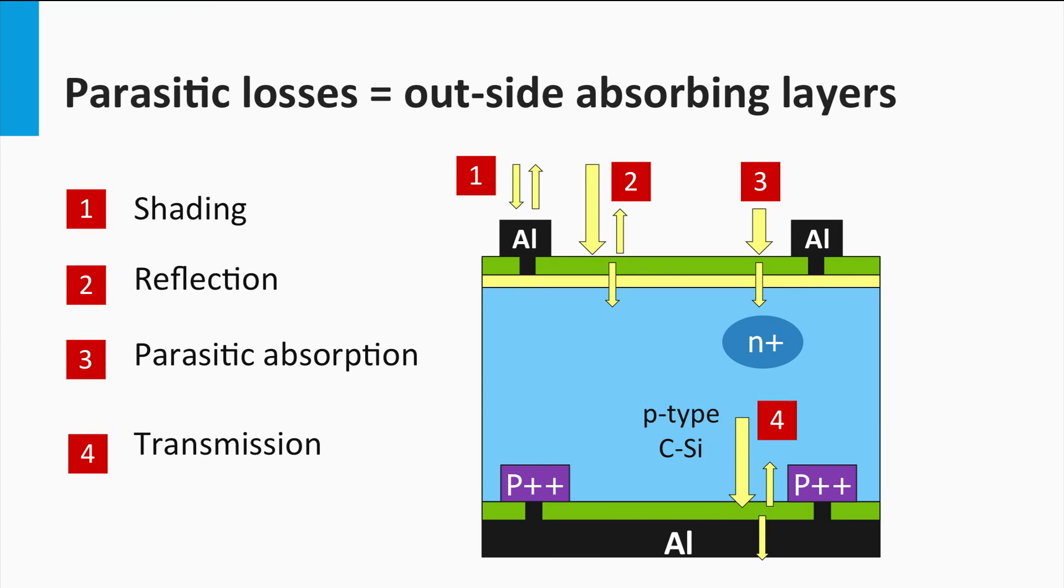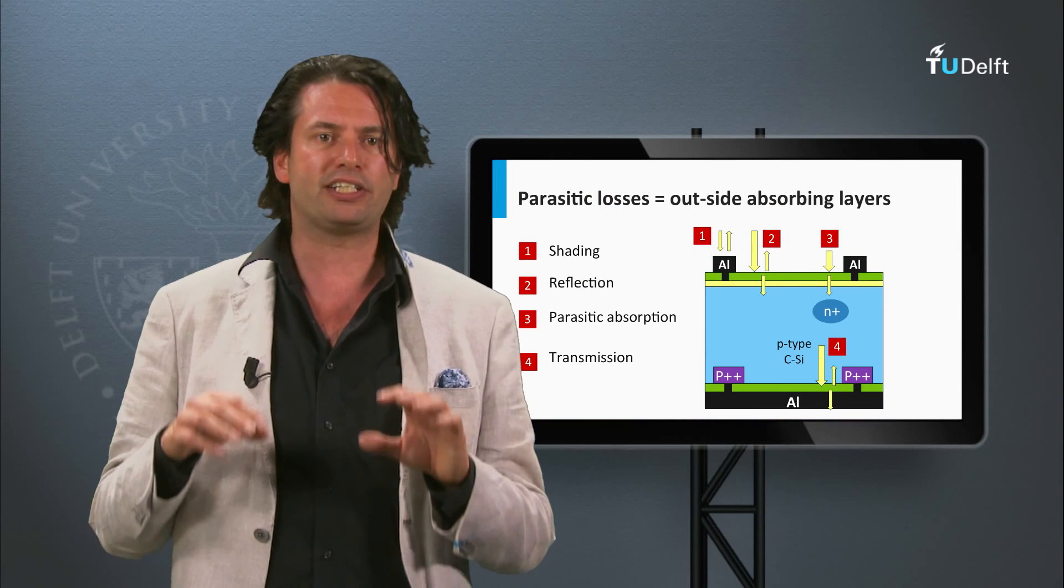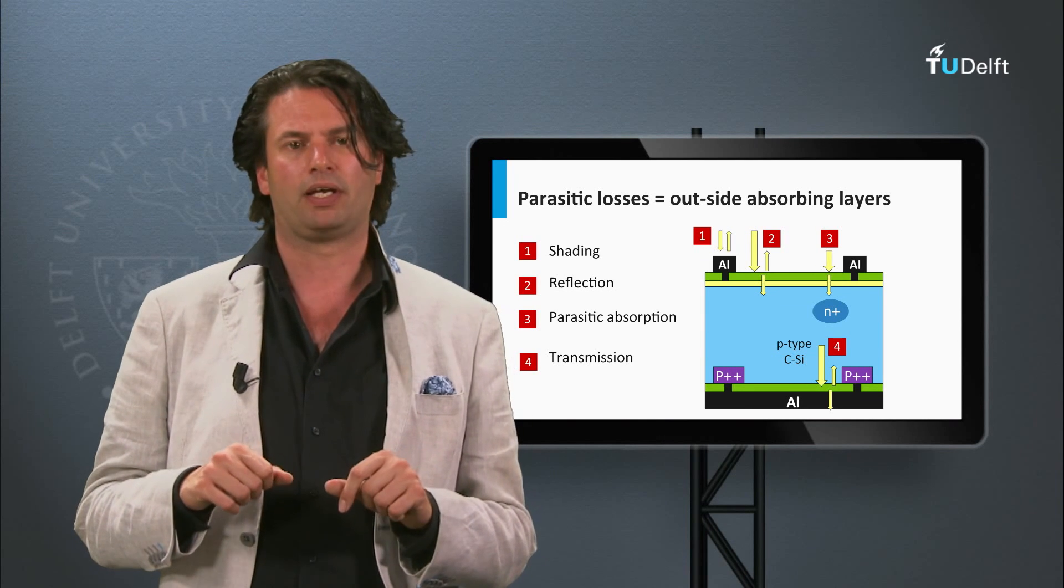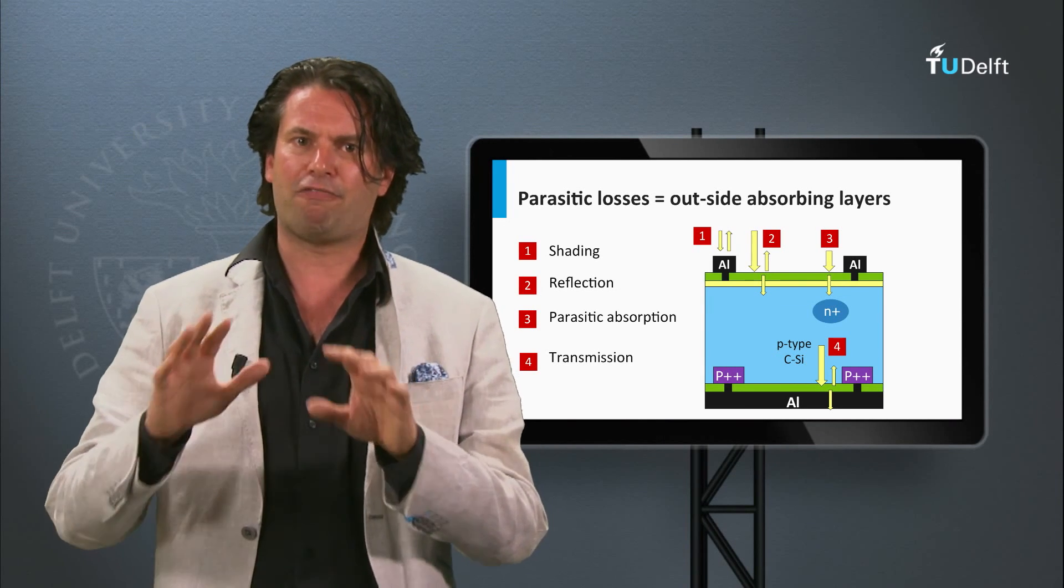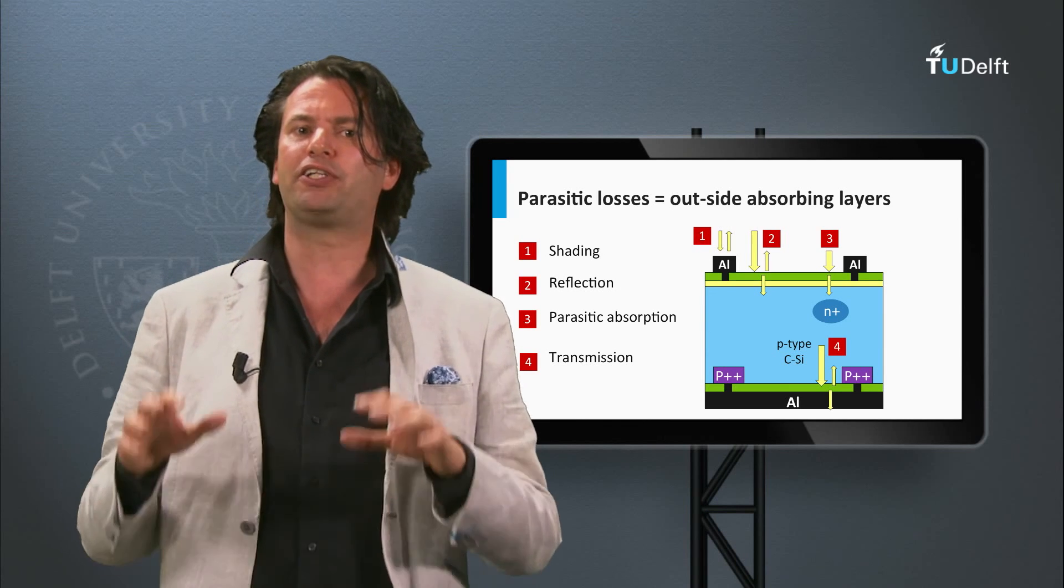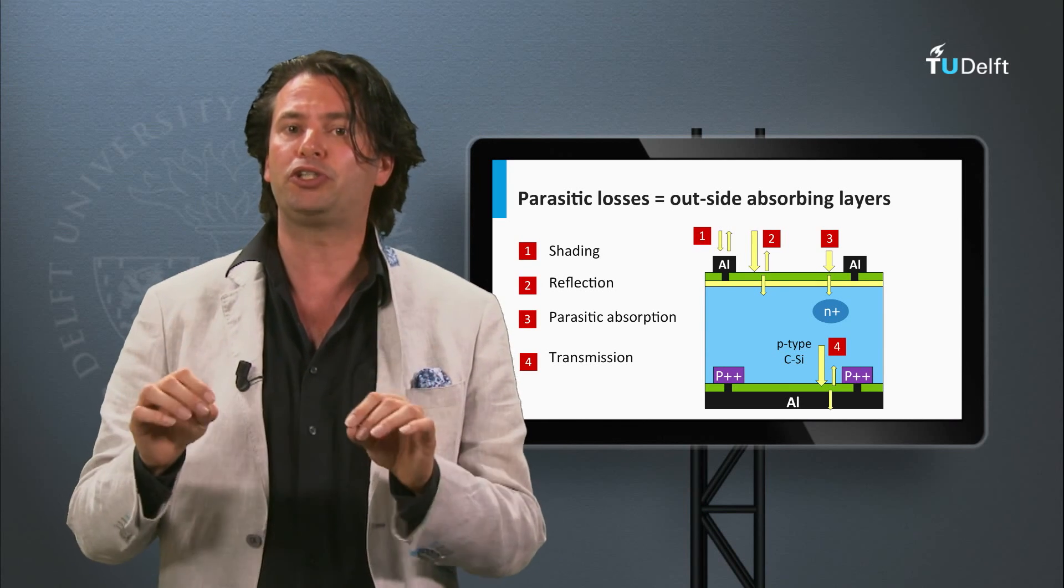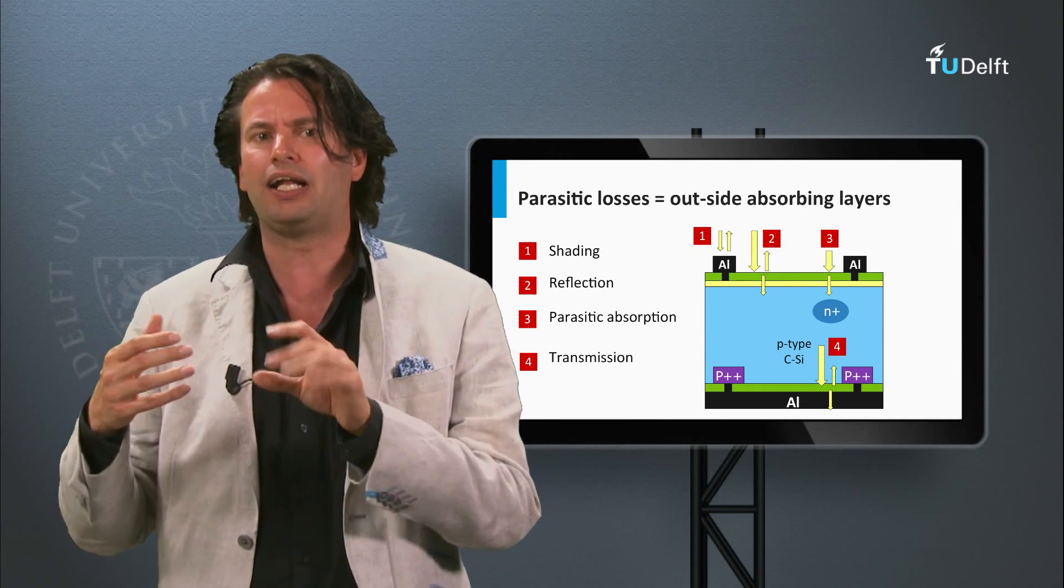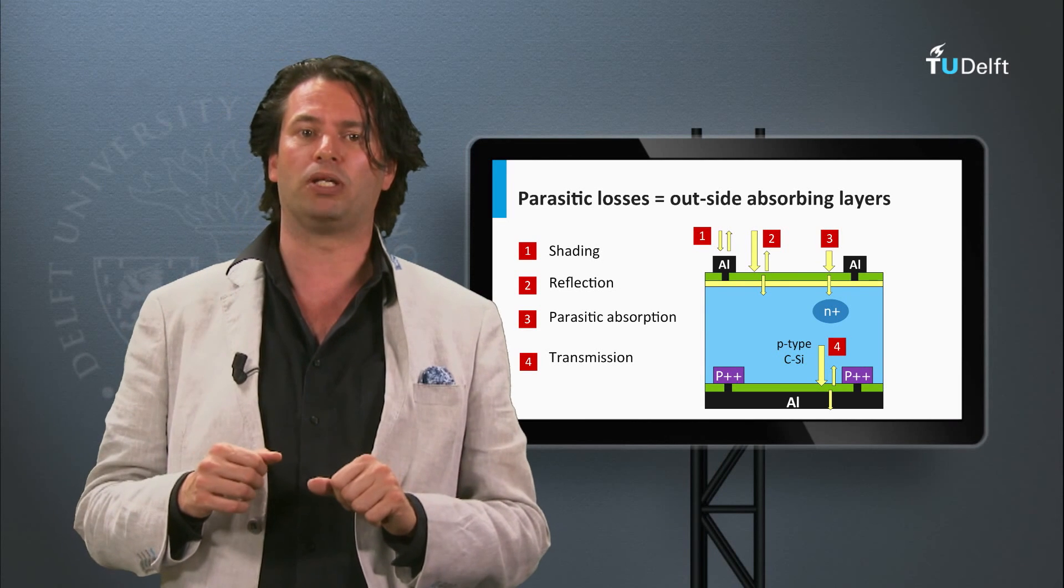Finally, if the absorber layer is not thick enough to absorb all light, part of the light will be transmitted. This loss mechanism starts to play a role for solar cells based on thin films. In the next, final block of this week, I will discuss methods to reduce the reflection at the front surface of a solar cell and I will discuss under which condition light might be trapped in the absorber layer.